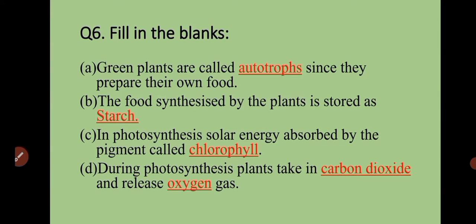Question number six is fill in the blanks. First: green plants are called autotrophs since they prepare their own food. Second: the food synthesized by the plant is stored as starch. Third: in the photosynthesis process, the solar energy is absorbed by the pigment called chlorophyll. Fourth: during photosynthesis, plants take in carbon dioxide and release oxygen gas.